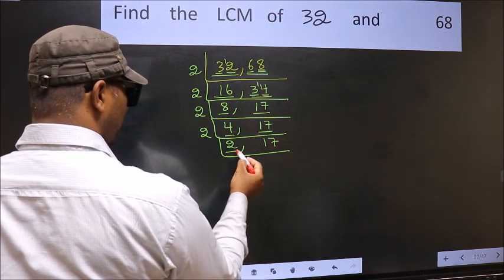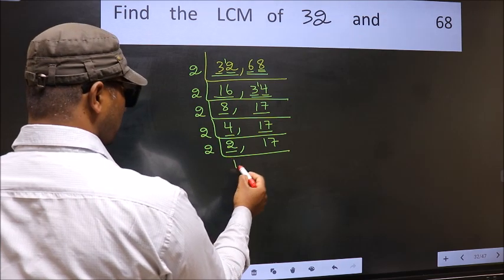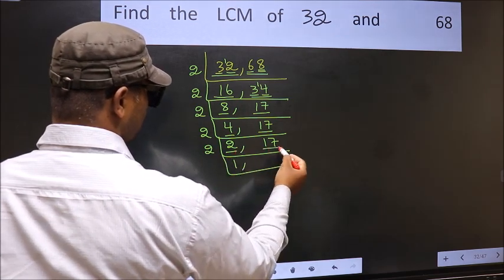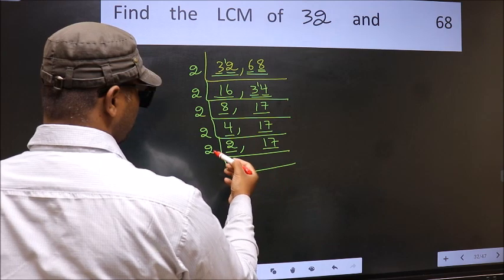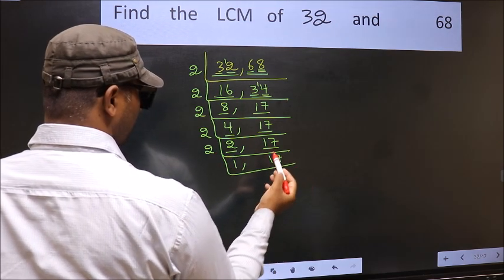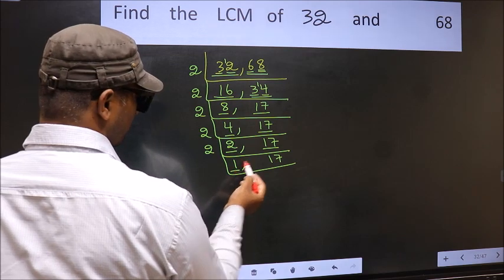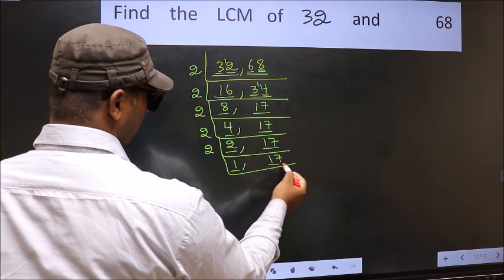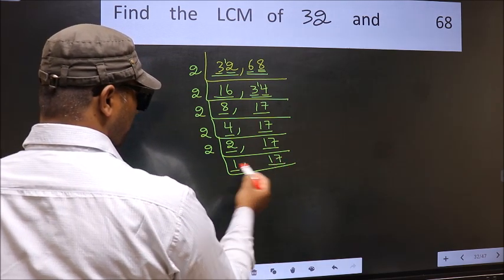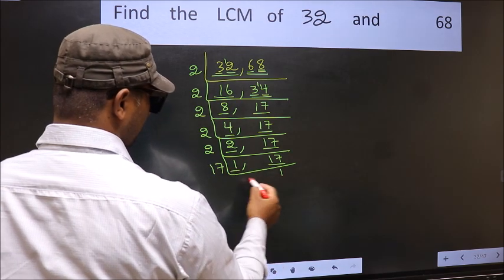Now here we have 2; 2 is a prime number, so 2 times 1 is 2. The other number is 17, which is not divisible by 2, so we write it down as it is — now we have 1 here. Focus on the other number, 17. 17 is a prime number, so 17 times 1 is 17.